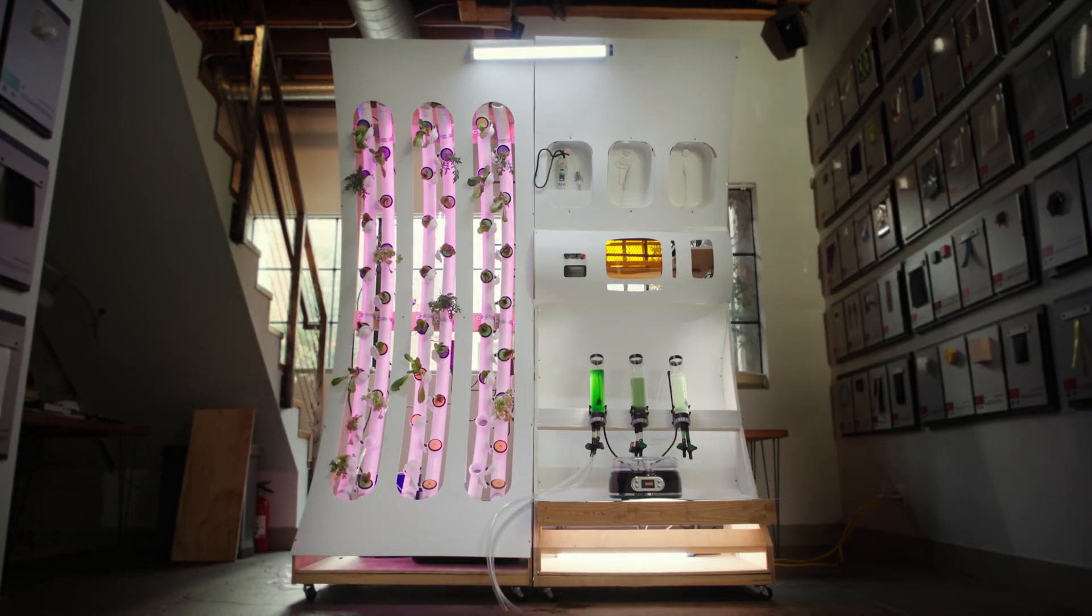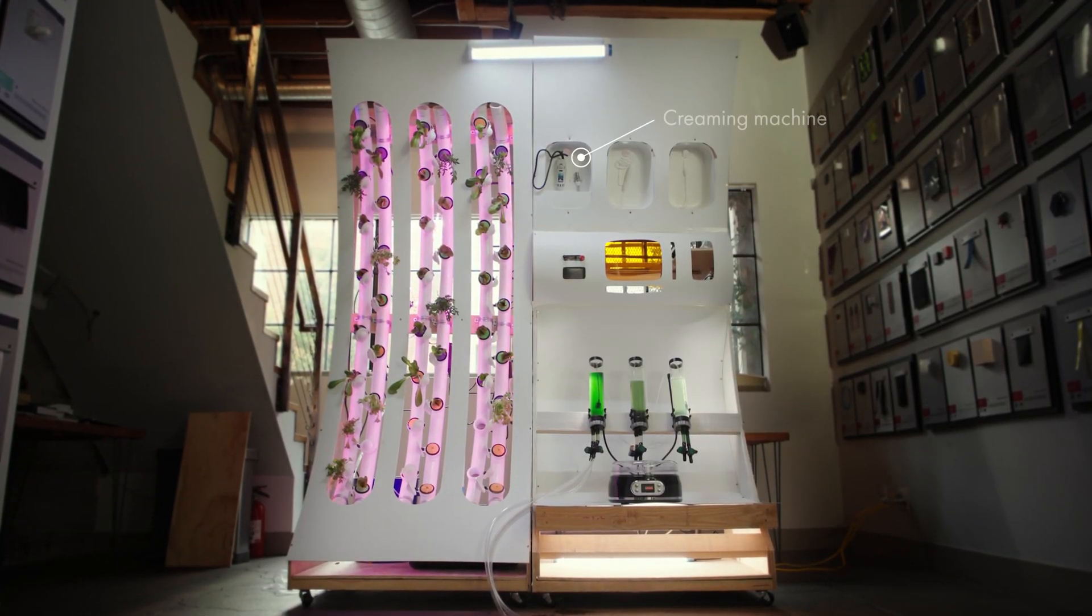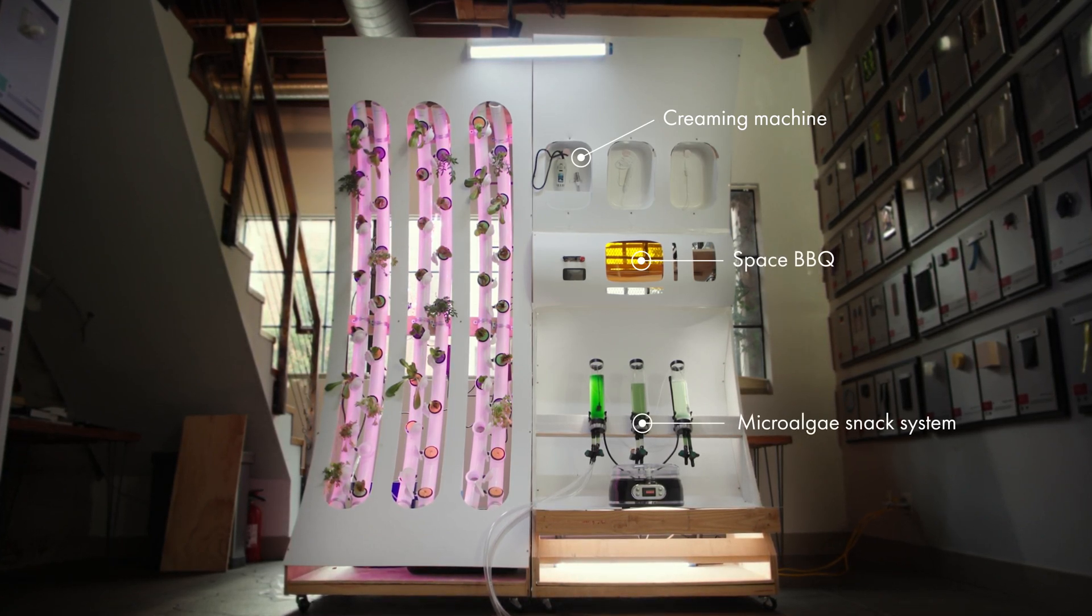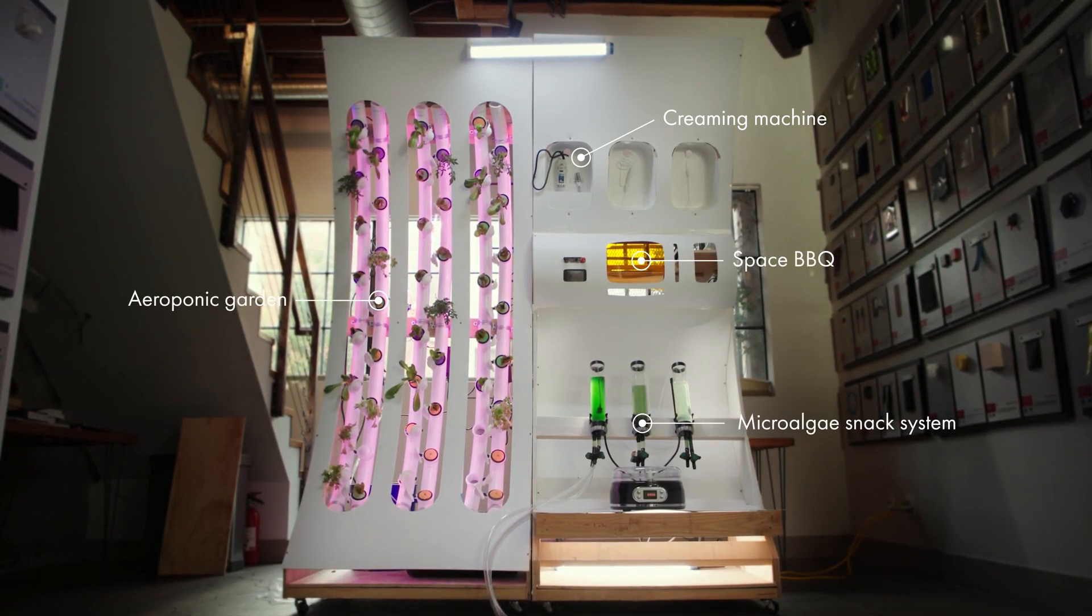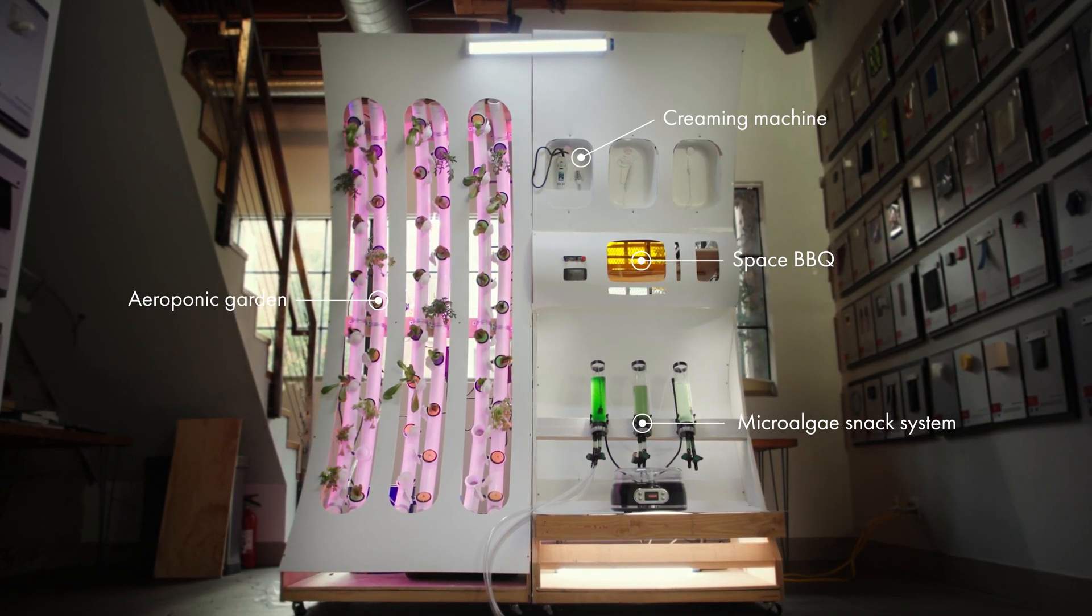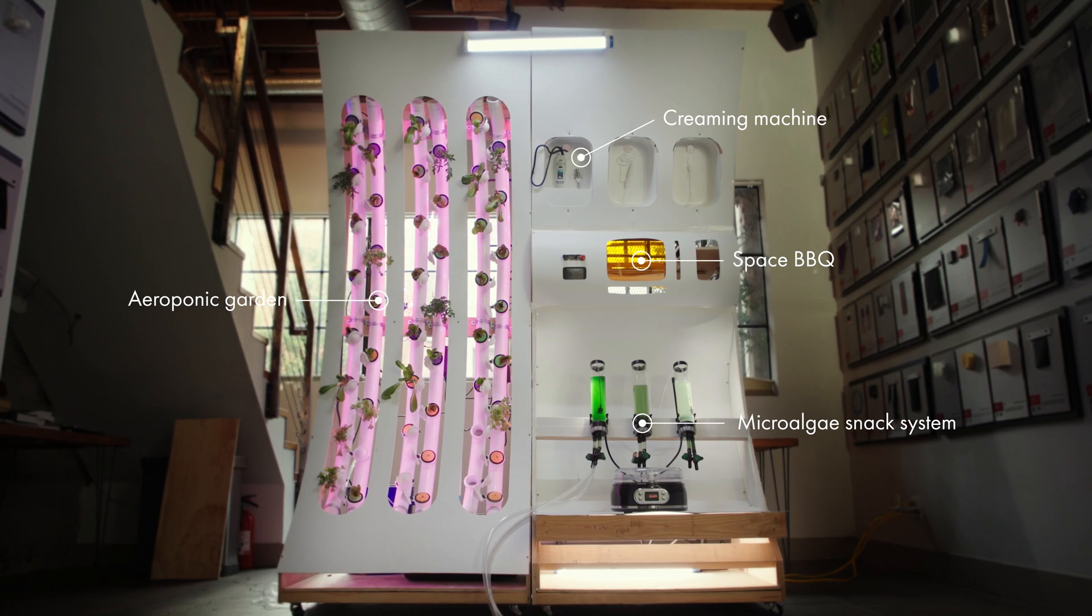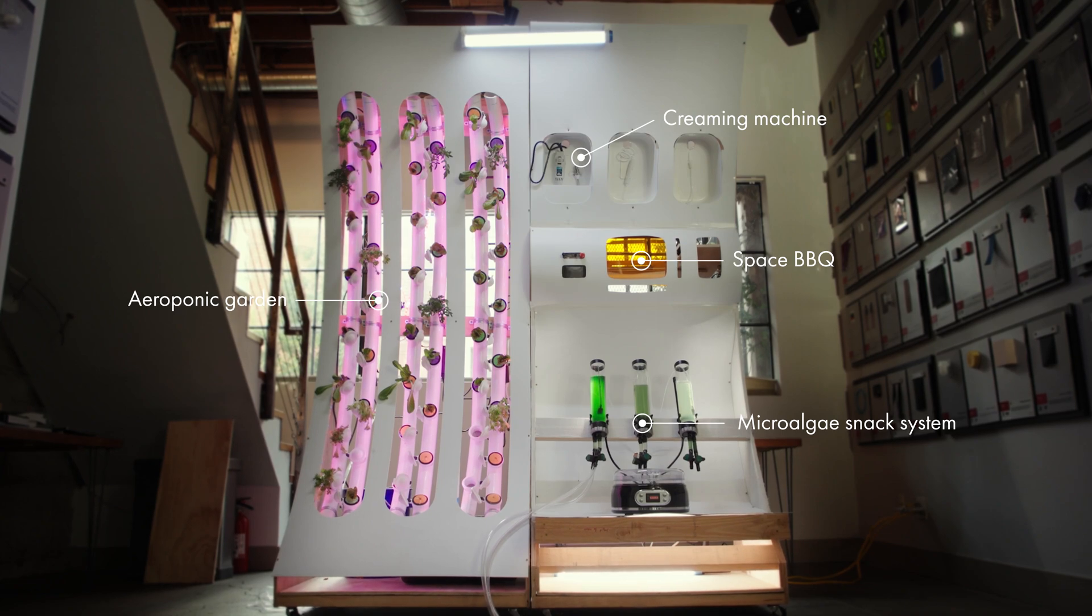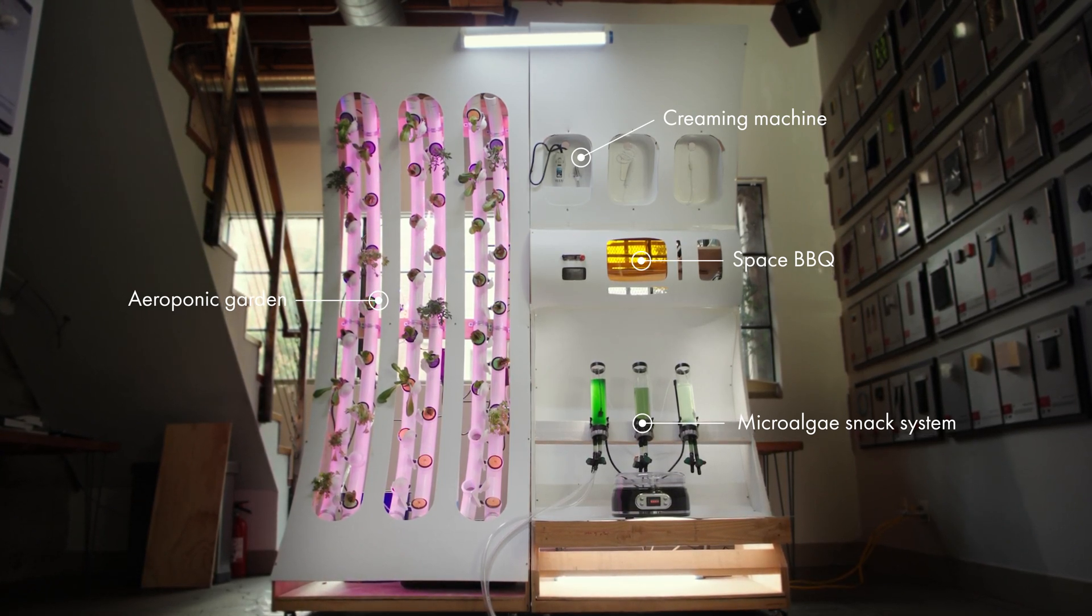The Space Culinary Lab is divided in four sections: the creaming machine, the space barbecue, the microalgae snack system, and the aeroponic garden. We will illustrate our narrative with our functional prototype that displays how astronauts can grow and prepare delicious foods and beverages, and of course, clean after themselves and keep going for the entirety of the Deep Space mission.